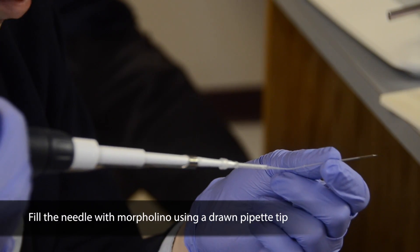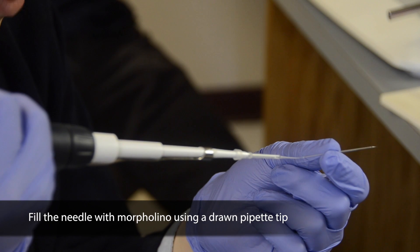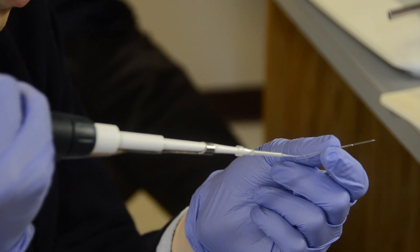The first step of microinjecting is to load your needle with Morpholino using a thin drawn pipette tip. Make sure there are no bubbles in the needle.